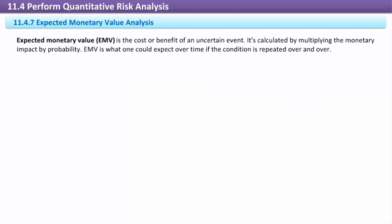Expected monetary value analysis. Expected monetary value EMV is the cost or benefit of an uncertain event. It's calculated by multiplying the monetary impact by probability. EMV is what one could expect over time if the condition is repeated over and over.